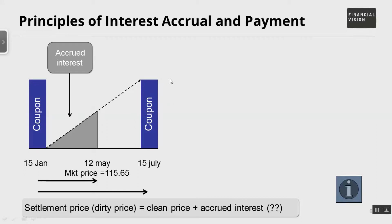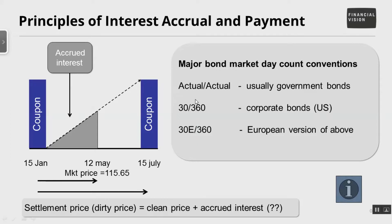There are a number of day count conventions that determine: (a) how many days have passed, and (b) how many days there are in the period. There are several but these three are the major ones. On the left-hand side of the dividing line is the numerator — the number of days since the last coupon was paid — and the denominator is the number of days in the coupon-paying period. The three conventions are: Actual/Actual; 30/360, which is used for American corporate bonds; and 30E/360, which is the European equivalent of 30/360.